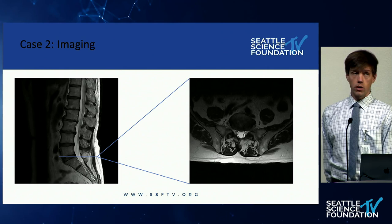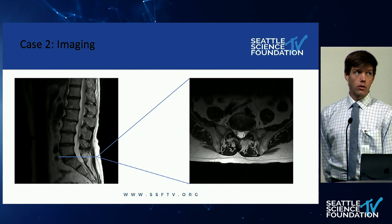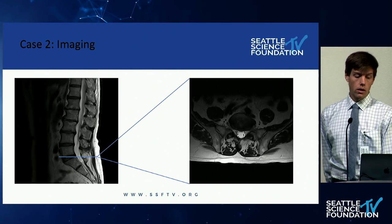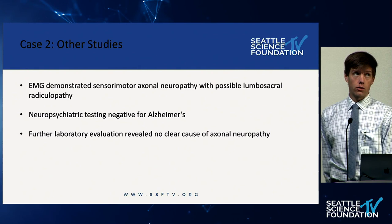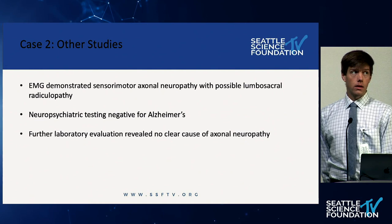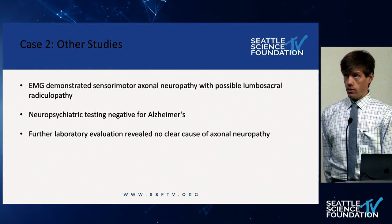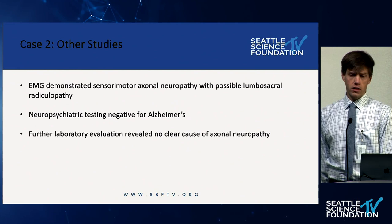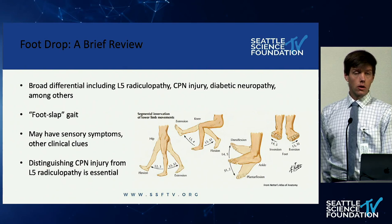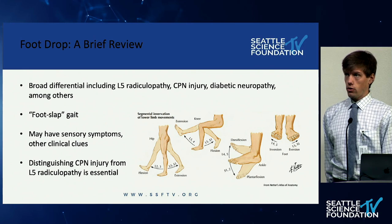He had MRI done, which was similar in some regards to the previous patient — some herniation of the discs posteriorly, no obvious stenosis that would be causing his symptoms. He had EMG done as well, which demonstrated some axonal neuropathy with possible lumbosacral radiculopathy. He did not have Alzheimer's disease on neuropsychiatric testing, and he had further laboratory evaluation done to look for possible causes of his axonal neuropathy.